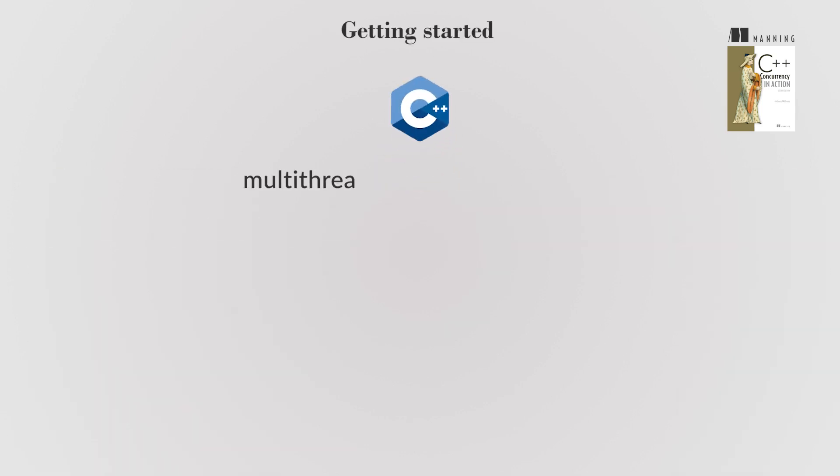To begin with multi-threaded C++ programming, a C++11, C++14, or C++17 compiler is needed. Programs will have variables, classes, and functions like any other C++ program, but some functions will run concurrently, requiring careful management of shared data and specific functions and objects to manage different threads.